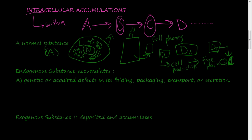You start seeing little pockets of substance A accumulating. Under a microscope, you'd be able to see in some cases that substance A is accumulating within this cell. An example of that is a fatty liver, which we're going to talk about in detail later in the video.